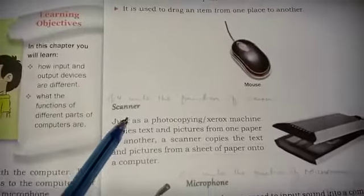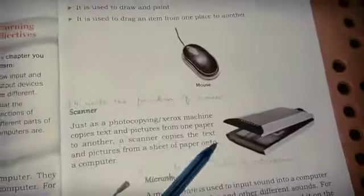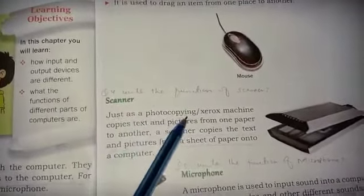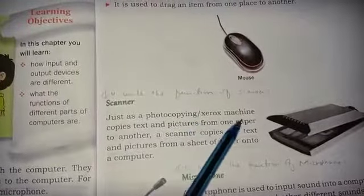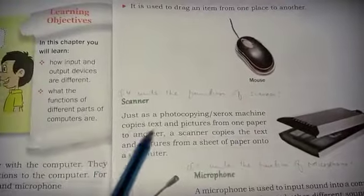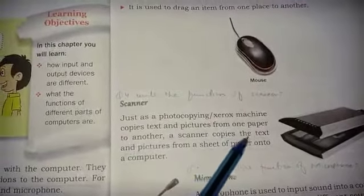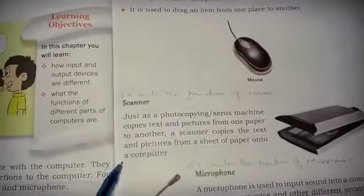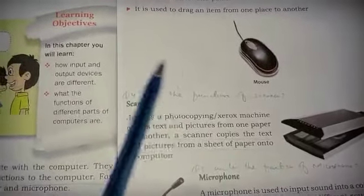Next one is scanner. You can see here, it's the picture of scanner. Just as a photography, Xerox machine copies text and pictures from one paper to another. A scanner copies the text and picture from a sheet of paper onto a computer.